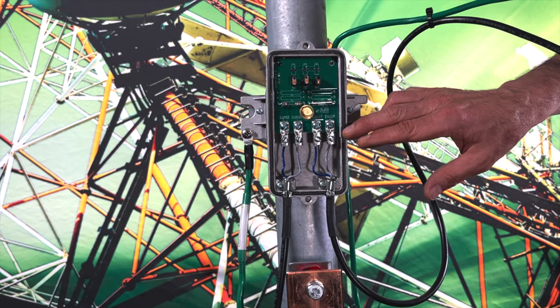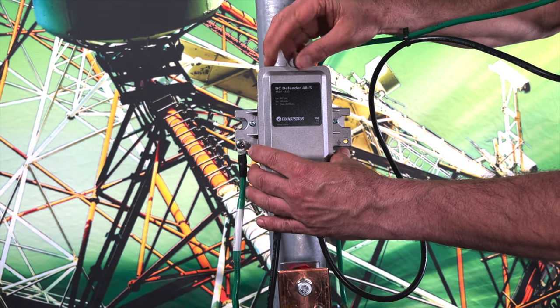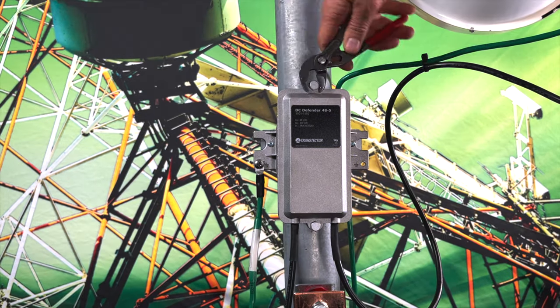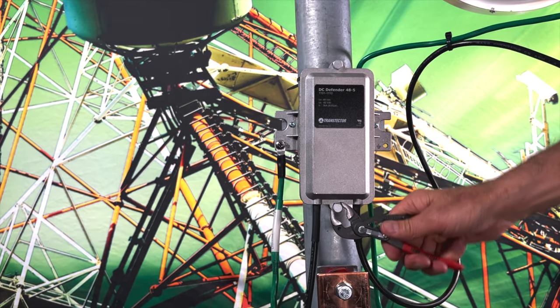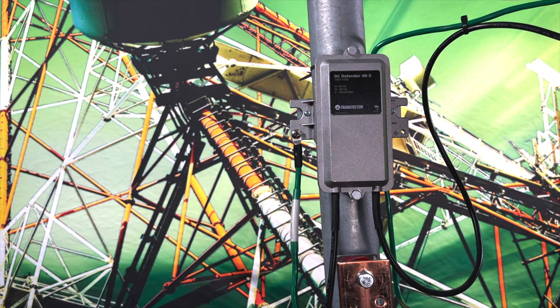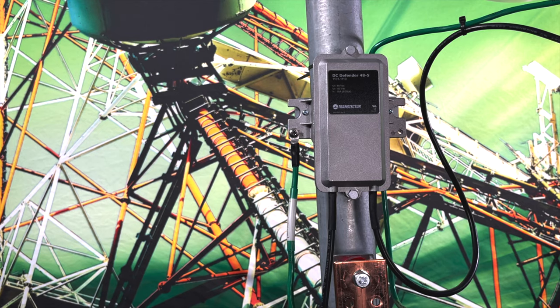Once you've connected everything, tightened it down, the last step is to put on the cover. That completes the installation for our DC surge protection and lightning protection for the WTM radios.